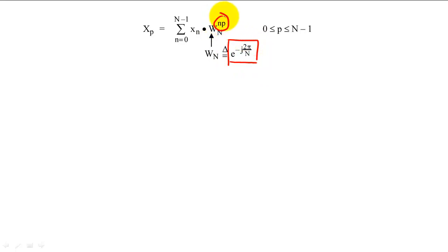For the sake of reducing notation, we substitute this exponential with capital W sub capital N. To figure out how to reduce the computation time of the DFT, let's work through the computation of the DFT for a four-sample signal.